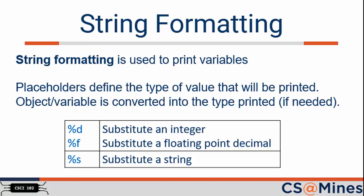String formatting allows you to control how you want a variable to be printed. One string formatting way is by using placeholders, via the percent operator. Placeholders define how you want the value to be printed. For example, as an integer, or as a floating point number. Each object or variable is then converted into the type specified if needed.